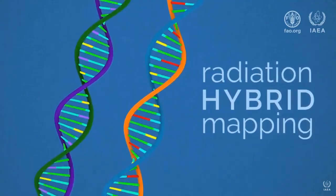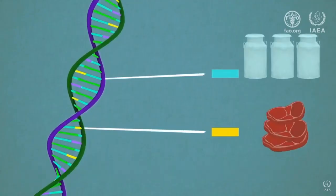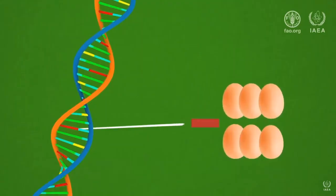Radiation hybrid mapping comes to the rescue to help determine the breeding potential of animals. By looking at the DNA, farmers can thus screen for desired traits and breed animals respectively.